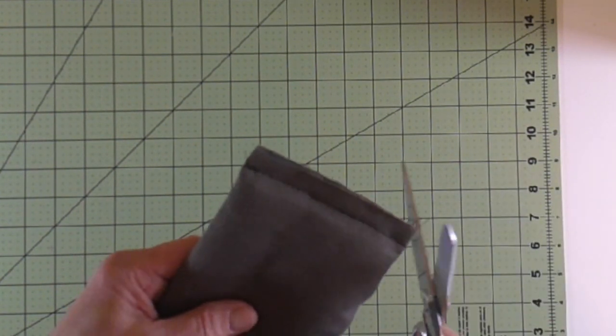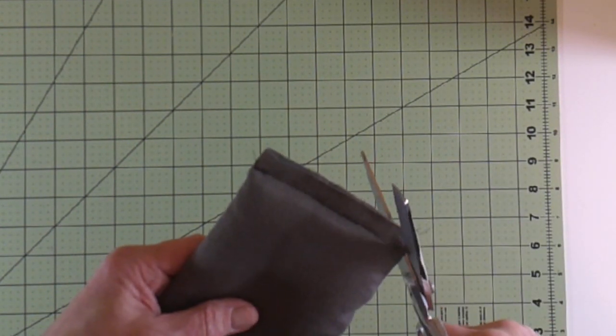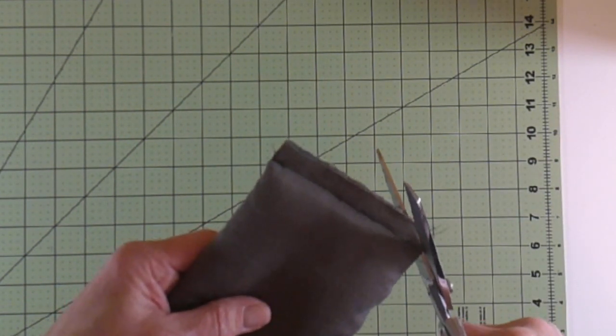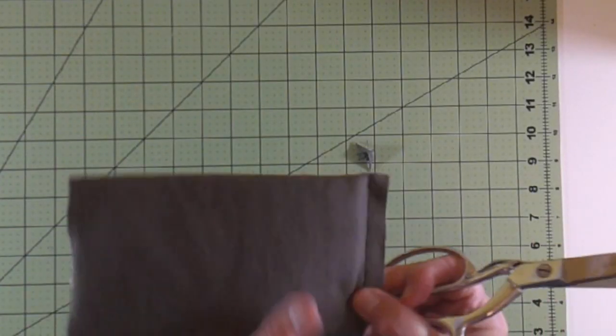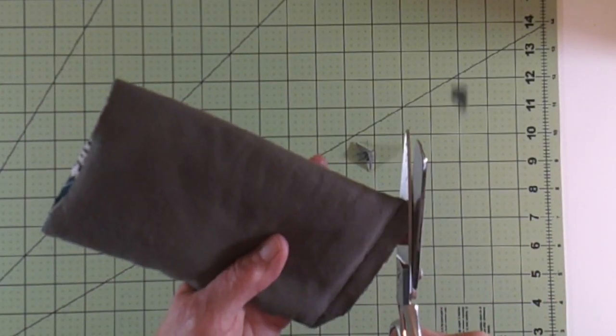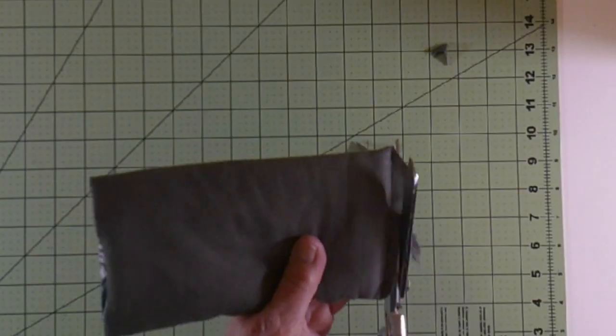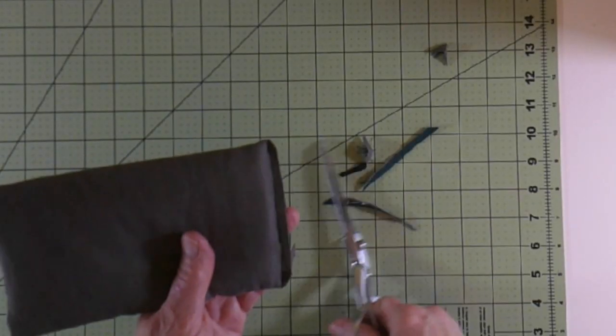Now on this one, we want to cut at an angle. Cut these corners. Do not cut your stitching, just cut it at an angle. And then trim that seam to about a fourth of an inch.